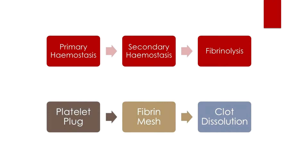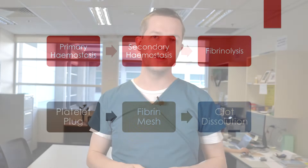To summarize simply: primary hemostasis is the formation of the platelet plug. Secondary hemostasis is the fibrin mesh that holds that plug together for more than a matter of minutes or hours — without it, the plug will dissolve very quickly under stress. Fibrinolysis is the dissolution of that clot when it has served its purpose, which may be some days or weeks later.